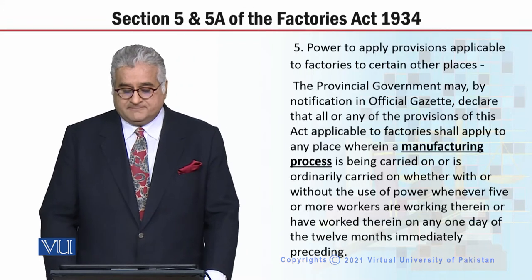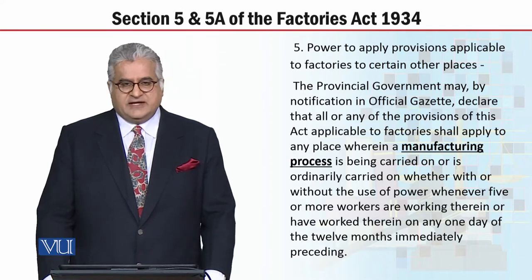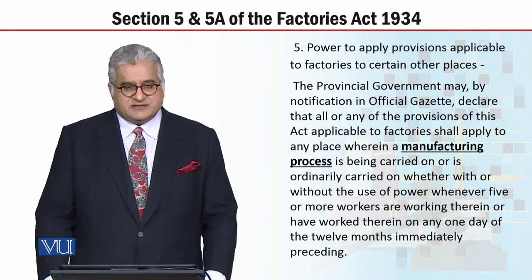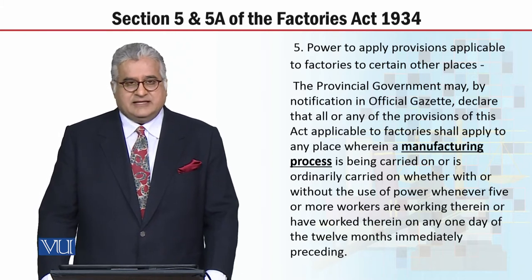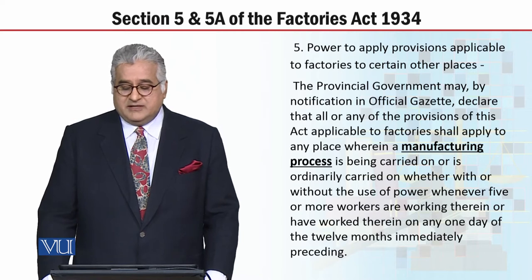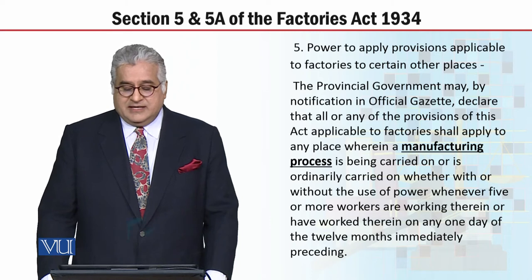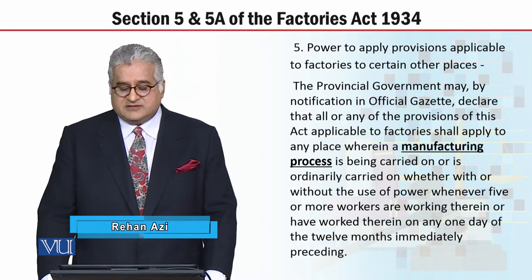Now let's read Section 5. The heading, which is Section 5, is Power to Apply Provisions Applicable to Factories to Certain Other Places. If there are other places which are not factories, can the provisions of the Factories Act be found or applied there? The provincial government may, by notification in the official gazette, declare that all or any of the provisions of this act applicable to factories shall apply to any place wherein the manufacturing process is being carried on.